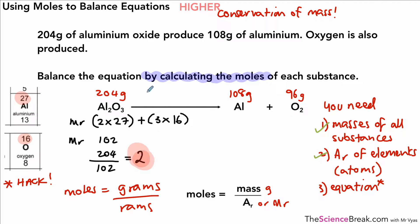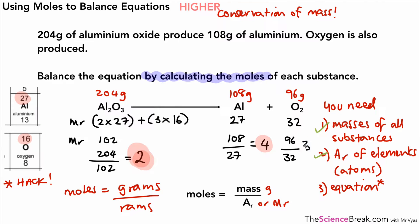Continuing with grams over rams for aluminium: the atomic mass is 27, so 108 divided by 27 gives 4 moles. For oxygen, the relative formula mass is 32, so 96 divided by 32 gives 3 moles. We now have mole values of 2, 4, and 3 for aluminium oxide, aluminium, and oxygen respectively.